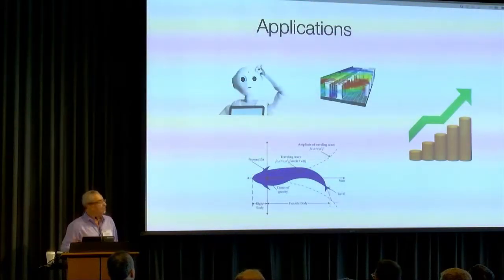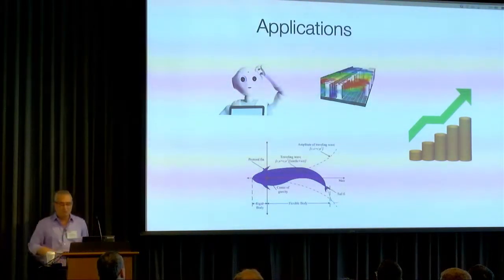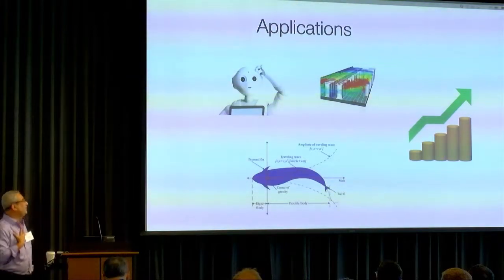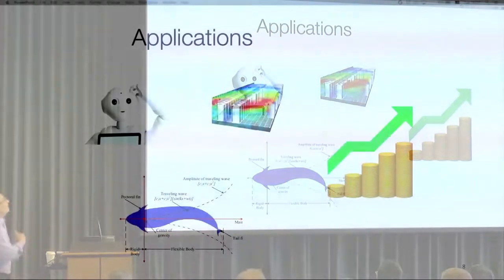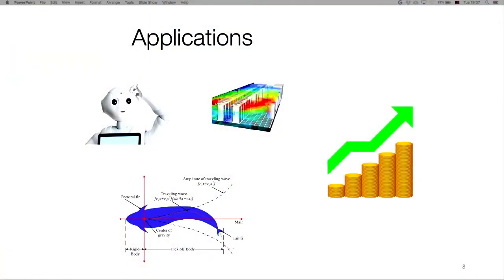Linear control has many applications. The original motivation we looked at was climate control in data centers at Google, in order to save energy and get a better control scheme. But it has also been applied in robotics, finance, and many other places.